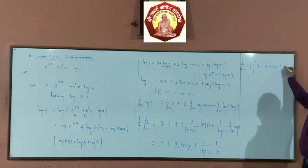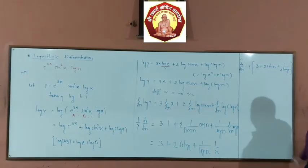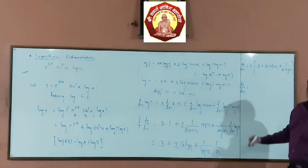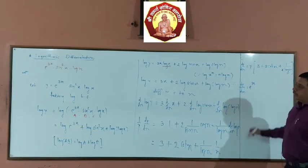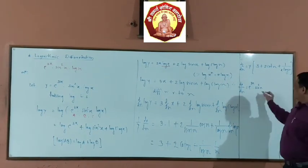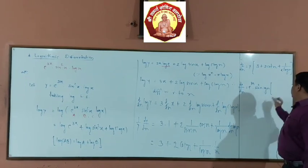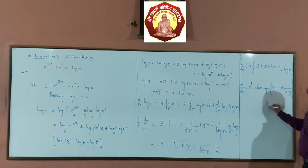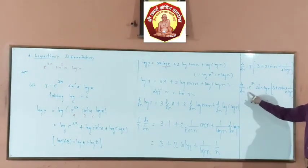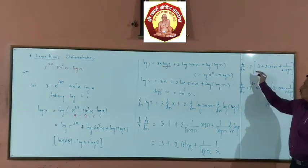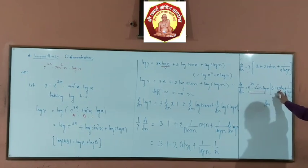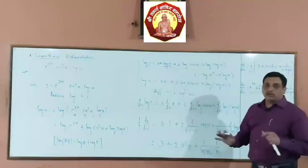Therefore dy/dx = y · [3 + 2·cot x + 1/(x·log x)]. Substituting y = e^(3x) · sin²x · log x: dy/dx = e^(3x) · sin²x · log x · [3 + 2·cot x + 1/(x·log x)].